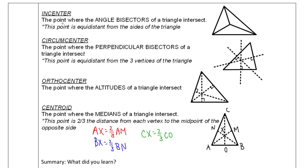Let's learn what these points are called when they intersect. First is the incenter. The incenter is where the angle bisectors intersect, and each of these segments bisect the angles — they will all intersect at this point, which we call the incenter.